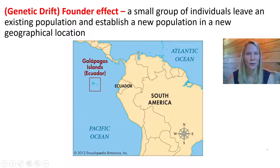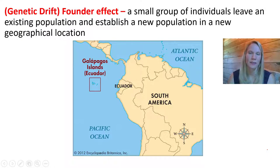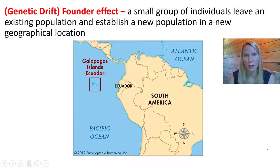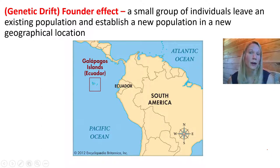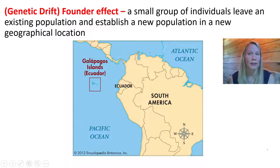Let's go back to the Galápagos — a collection of islands off the coast of Ecuador in South America. We see the founder effect a lot in island populations, where organisms on the islands resemble mainland plants and animals but with variations. Islands get colonized by small groups of plants and animals that either fly, swim, or are blown by wind from the mainland, and it is random chance which individuals land on these islands and what genetics they carry.